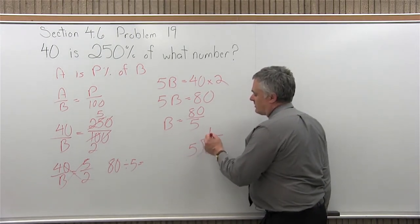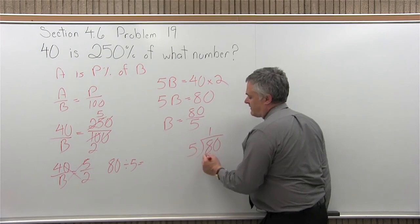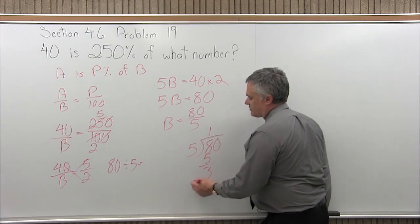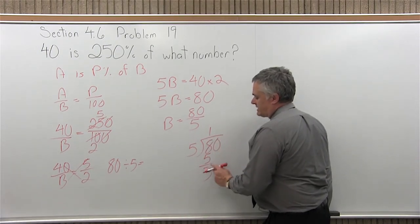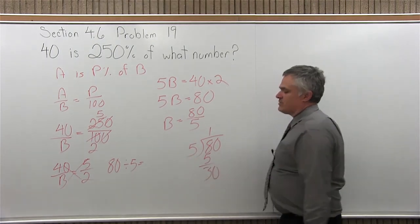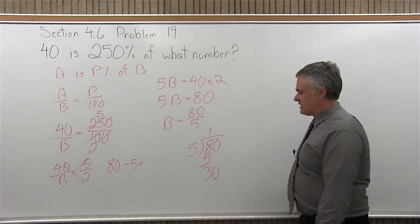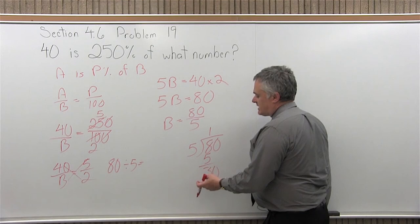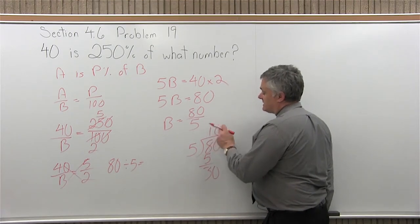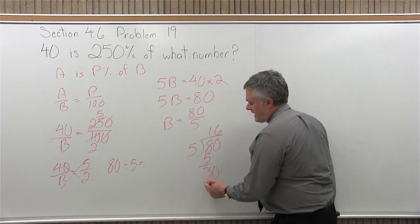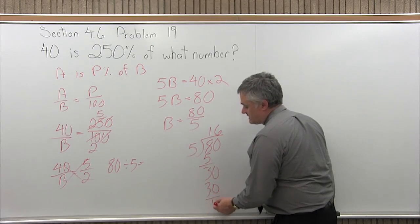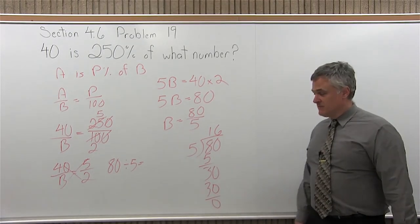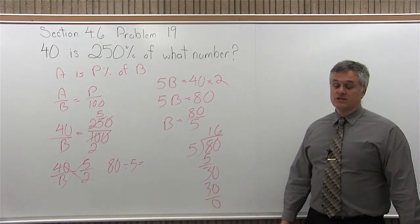5 divides into 8, it will fit, it will only go once. 1 times 5 is 5, 8 minus 5 is 3. Bring down the next digit, which is a 0, put it next to the 3. 3 with a 0 after it is 30. 5 times something is 30, well, times 6 fits exactly. 6 times 5 is 30, 30 minus 30 is 0. It goes in evenly, no remainder, and as I predicted, the answer really is 16.